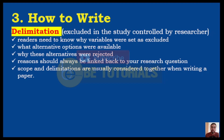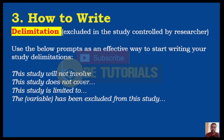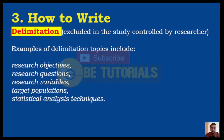Scope and delimitation are usually considered together when writing a paper. When discussing the delimitation, the following phrases could be useful. Some of the topics when discussing the delimitation are as follows: research objectives, questions, variables, population, and statistical analysis techniques.